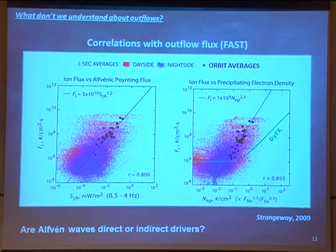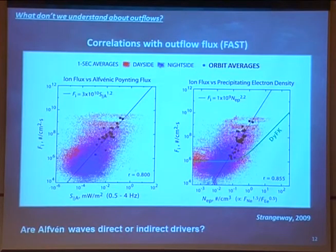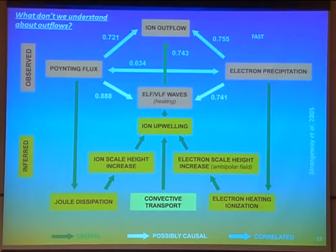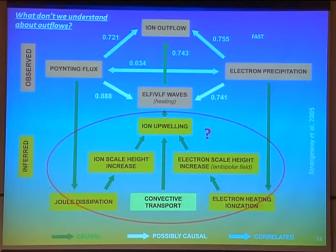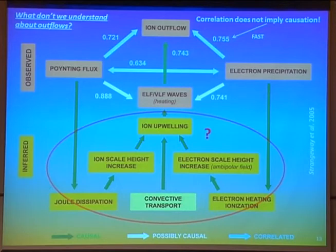Coming back to the question of what we need from the ionosphere-thermosphere community: one problem is we have to agree on what's the ionosphere-thermosphere and what's the magnetosphere. We're in a no-man's-land region where both communities need to come together to make progress in understanding the causal relationships. Mike Lamone showed a version of Bob Strangeway's 2005 paper showing various relationships and pathways leading to ion outflow. We all think we understand Joule dissipation and how electron precipitation affects the ionosphere, but in fact we really have no direct measurements of these processes — it's largely based on models and theory. Furthermore, while the upper pathways show correlation coefficients derived from the FAST data, correlation does not imply causation, and as the previous plot showed, there's a lot of scatter in the correlation relationships.